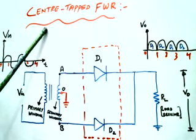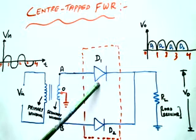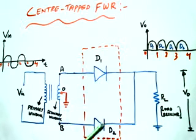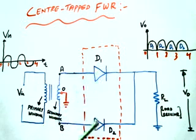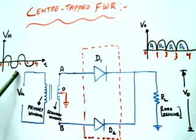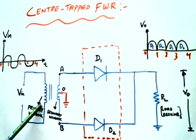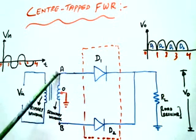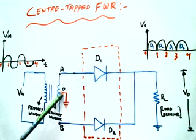Now we will discuss about center tap full wave rectifier. It consists of two diodes, D1 and D2. Half wave rectifier consists of a single diode, whereas full wave rectifier consists of two diodes, D1 and D2. The AC input signal is given as input to the transformer. This is the primary winding of the transformer and this is the secondary winding of the transformer.